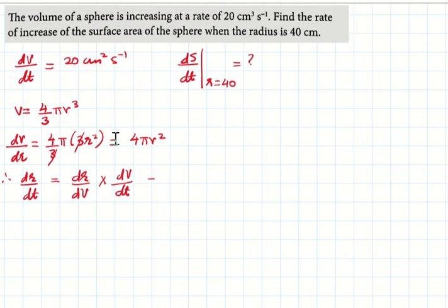So dr/dt: dV/dr is 4πr², so dr/dV is the reciprocal, 1/(4πr²). dV/dt is 20. Substitute that, so 20/(4πr²). Four fives are 20. When radius is 40, they have given that, we substitute the radius as 40.